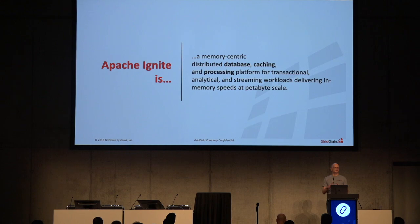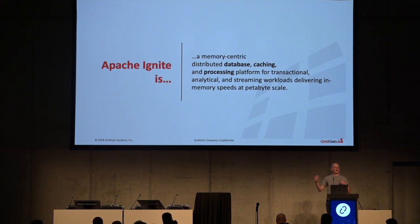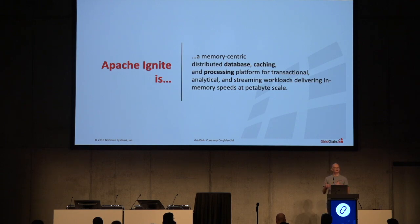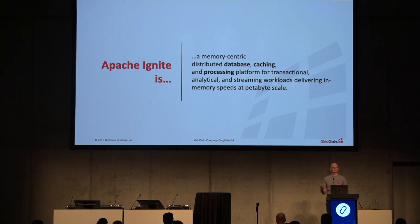Apache Ignite presents some differences from how we normally deploy applications in Kubernetes. Typically in Kubernetes, you scale things out and the pods don't interact in many ways — you scale them out, each node is identical, and you can add and remove them to scale things without too many consequences. Apache Ignite and other in-memory databases are slightly different, so we're going to take a step back and talk about how they differ from traditional databases.